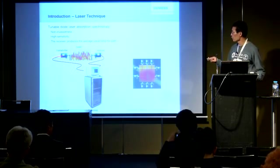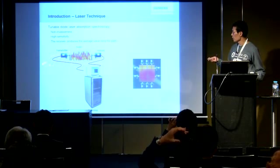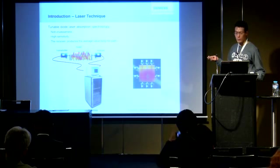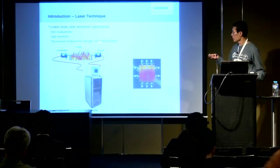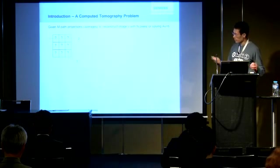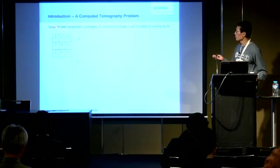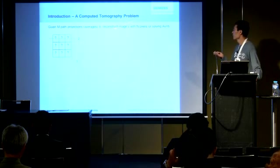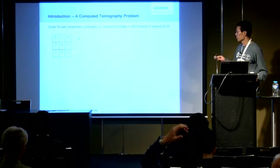The idea is that you install two devices on each side of the boiler — one is a transmitter which sends out a laser beam, and the receiver will receive the laser beam, process the value, and generate an average value along this path. Now if we make it more mathematical, we are talking about computing a tomography problem. We have m path projections — averages — and our idea is that we want to reconstruct the image v with n pixels.